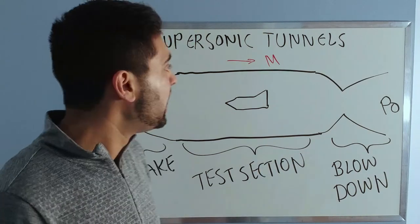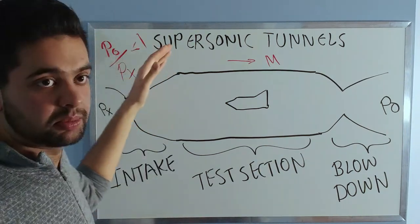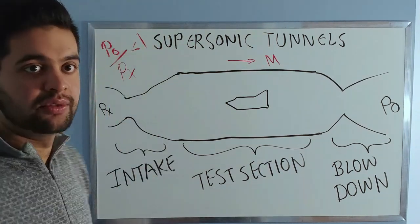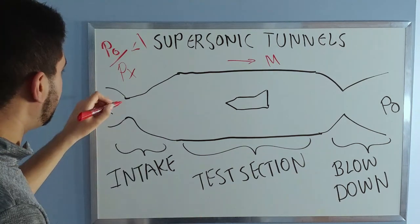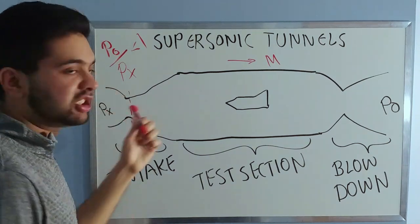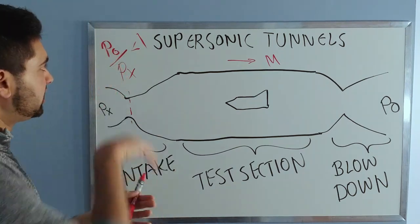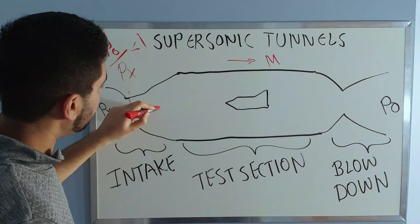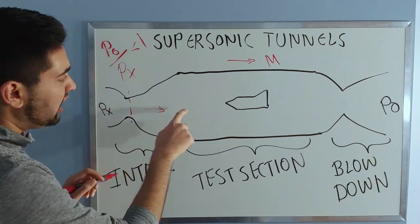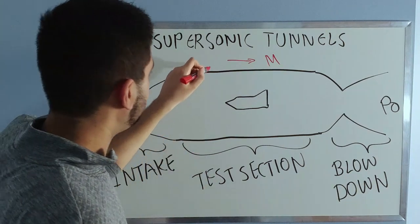Initially you will have subsonic flow and eventually as you lower this ratio even more, you will have what is known as a normal shock forming here. This also occurs in rocket nozzles, and as you lower this ratio, it will move downstream. Eventually this normal shock will be attached here.